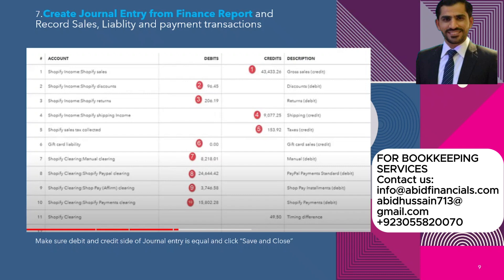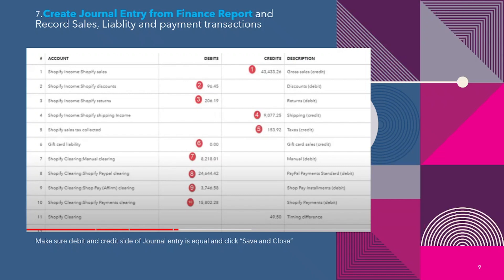Please make sure to run the Profit and Loss report for the same period as the journal entry. For example, if you recorded the sale on August 31st, it will appear in August, so you need to run your Profit and Loss report for August.